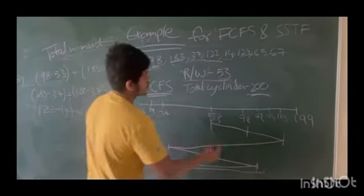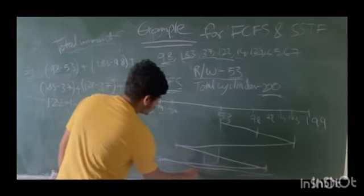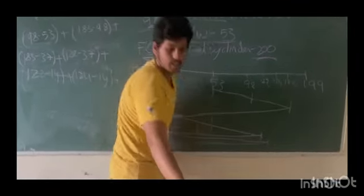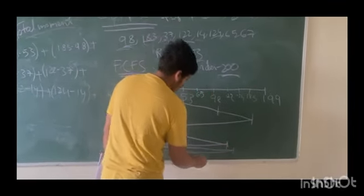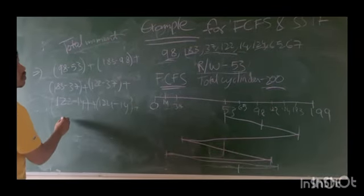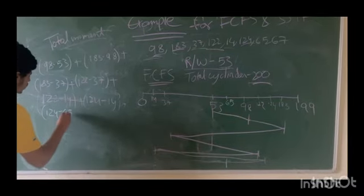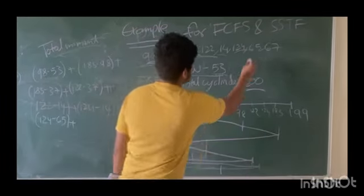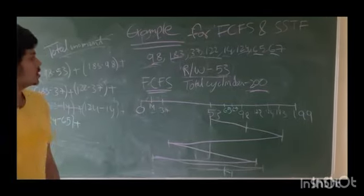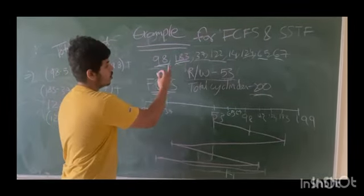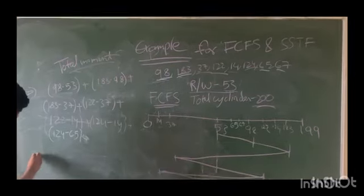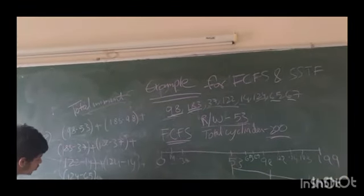Next one is 67, so from 65 to 67, that is 67 minus 65. So in First Come First Serve, we go in order. We don't need to go to each in any particular order. When we add all of these, the total head movement is 640. This is the total solution for FCFS.